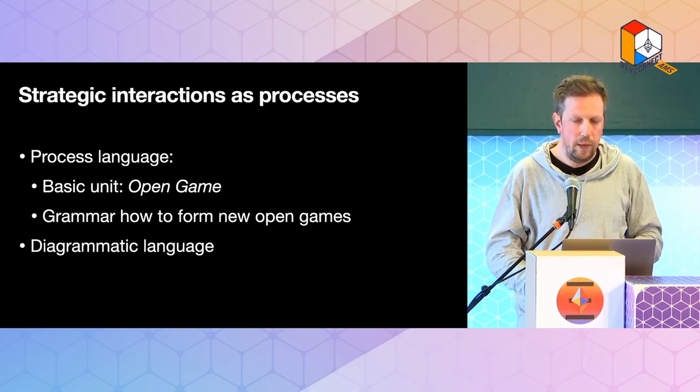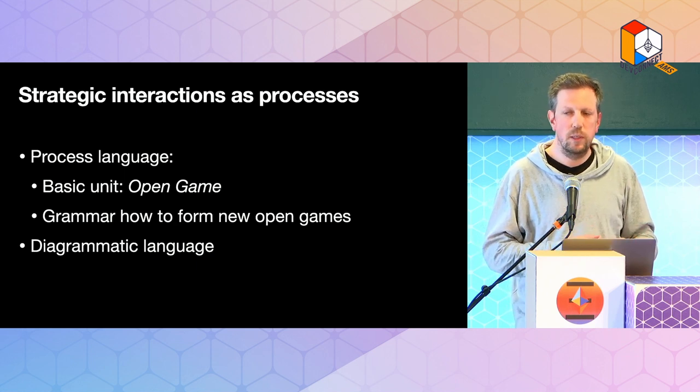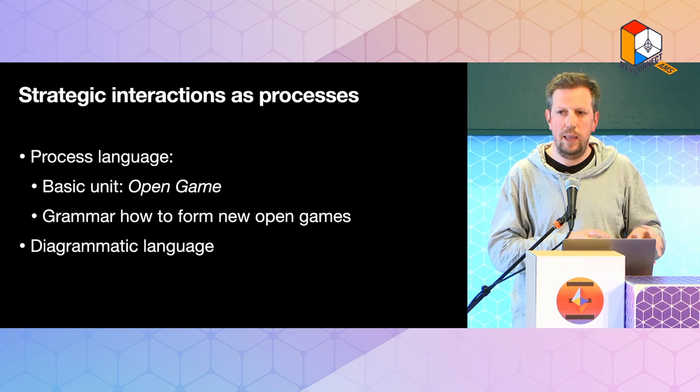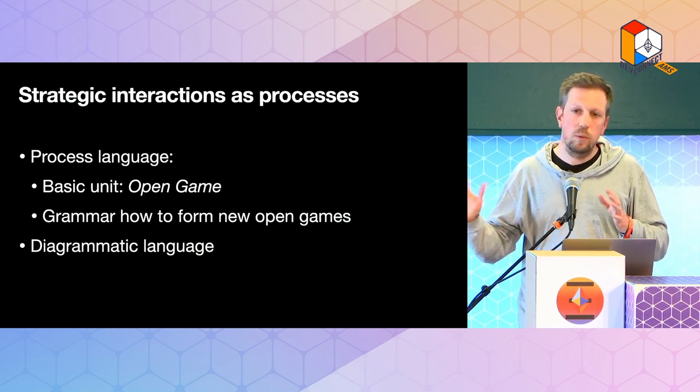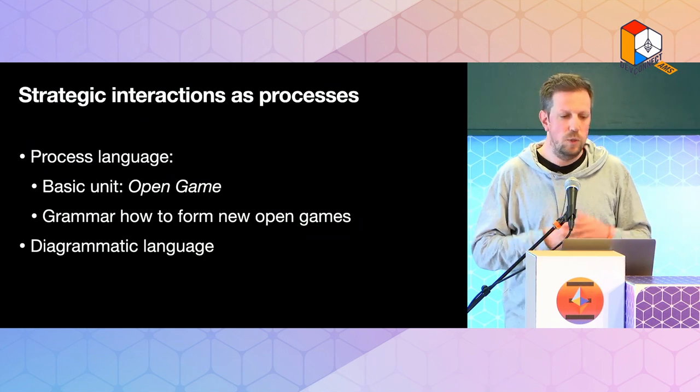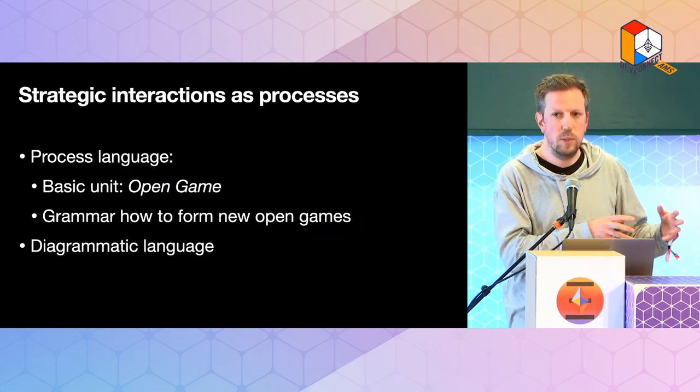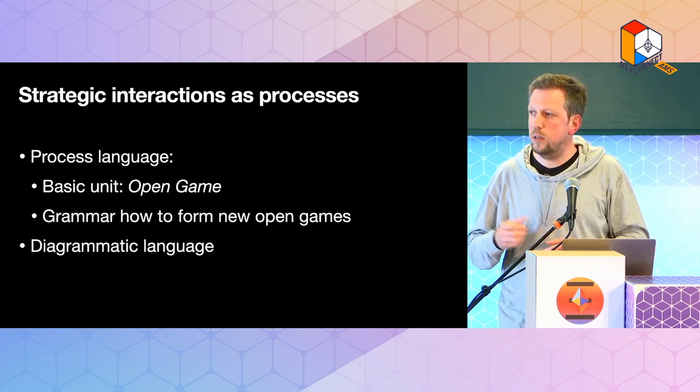The way to think about what is happening here is we are defining a process language. We have a basic unit — the open game — and ways of combining existing open games into new open games, like a grammar. Similarly to how adding two natural numbers gives another natural number, composing one game with another gives another open game. The algebraic expressions are equivalent to a diagrammatic language; we can go back and forth between the two, so I can show you diagrams and explain the intuition diagrammatically.